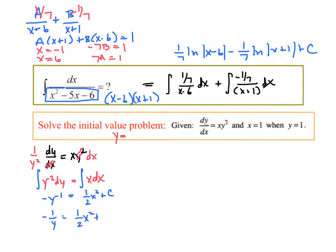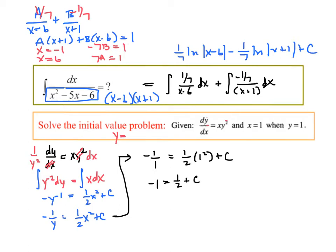Another way to write negative y to the negative first is negative 1 over y. At this point, because the constant appears, you could solve right away for the constant. Let's plug in 1 for y. So we have negative 1 over 1 equals (1/2) times 1 squared plus C. So negative 1 equals 1/2 plus C, which means the constant is negative 3/2.